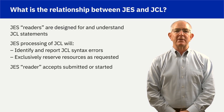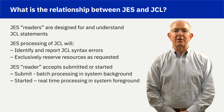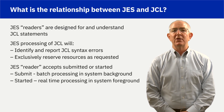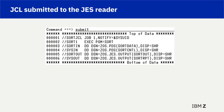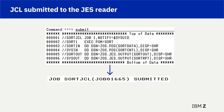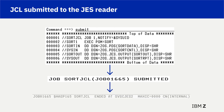JCL can be submitted to the JES reader, or a ZOS start command can be used to send JCL to the reader for execution. The example shown is JCL submitted to the JES reader. A message was returned acknowledging the sort JCL job was submitted and a unique JES job number 01665 was assigned. The JCL submitted includes an operand on the JCL job statement to notify the submitter upon completion. The last line shows job 01665 ended with maximum condition code of 0.